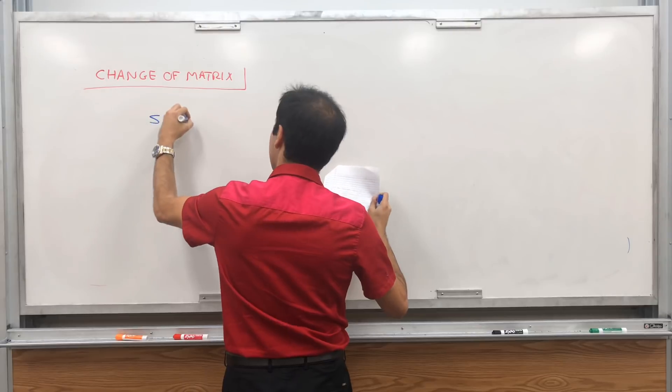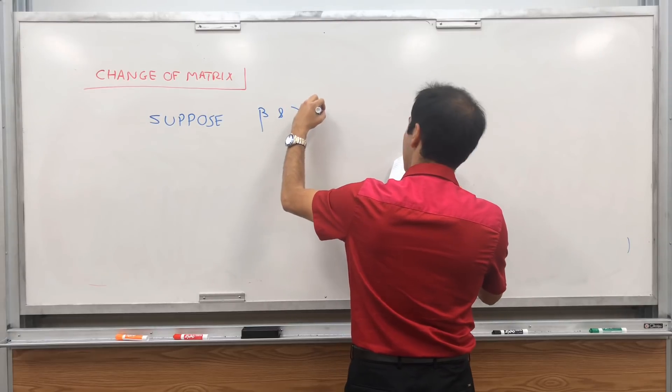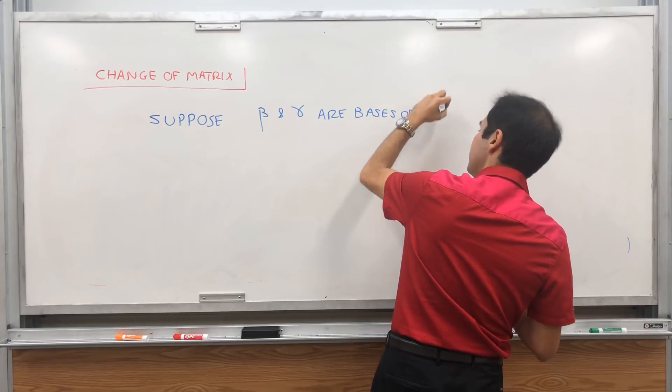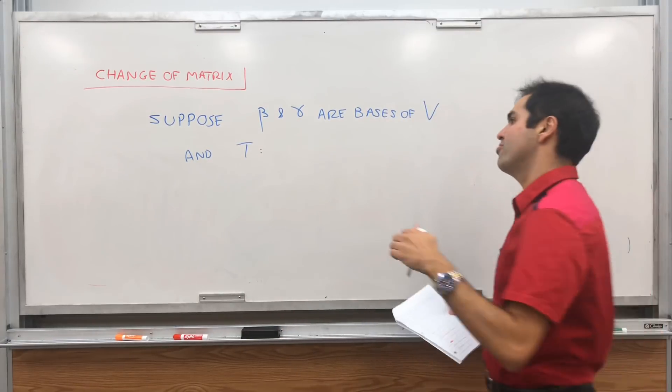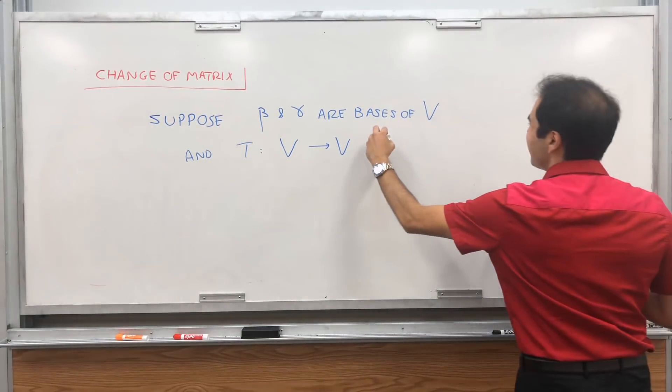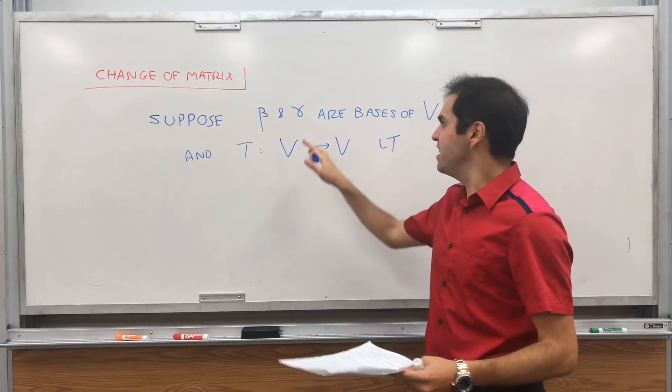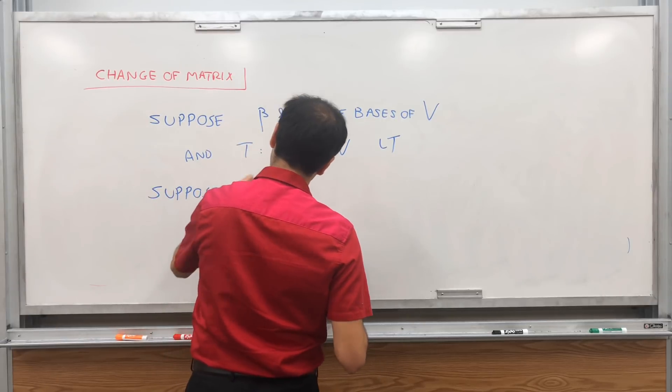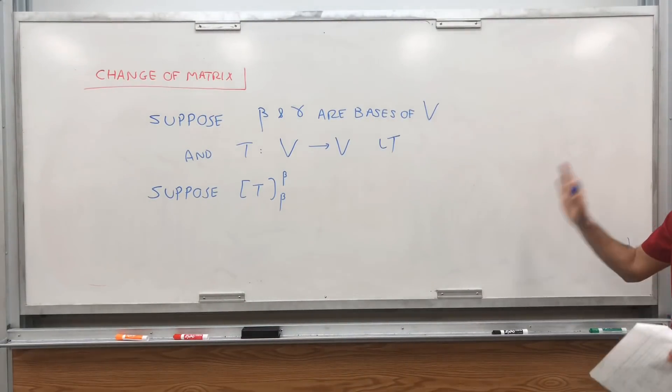Here's the setting. Suppose again V is a vector space and beta and gamma are bases of your vector space V, and T is a linear transformation from V to itself, a linear operator. Suppose we are given the matrix of T with respect to beta, where the input basis is beta and the output basis is beta.